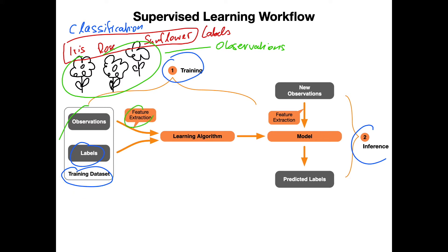In traditional machine learning, you would extract some features from the images, since traditional ML algorithms don't work very well directly on image data. You'd need a domain expert to help decide what features to use. For example, potential features could be the color of the flower, the height of the flower, or the number of leaves. You have to think about what would be a good feature and also what can be easily obtained from the image data.